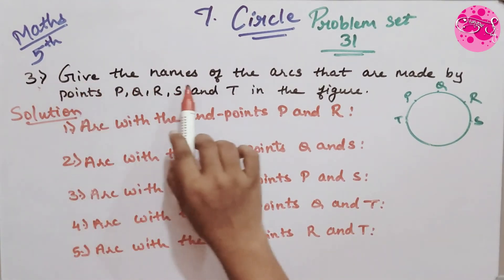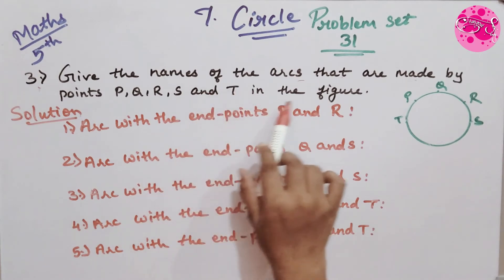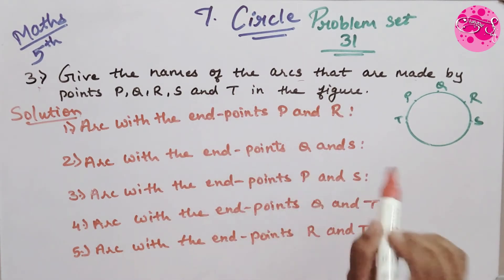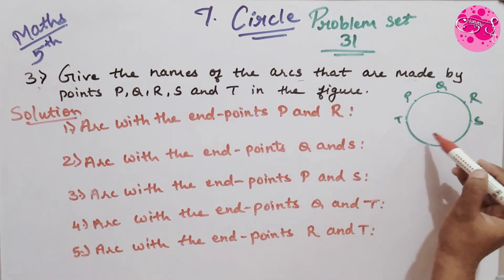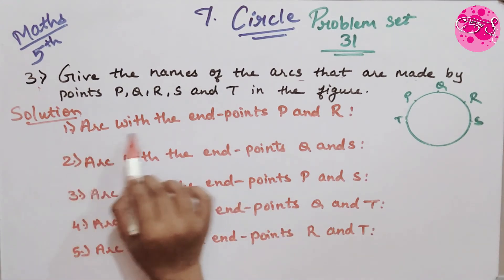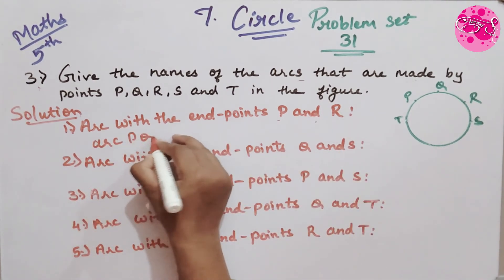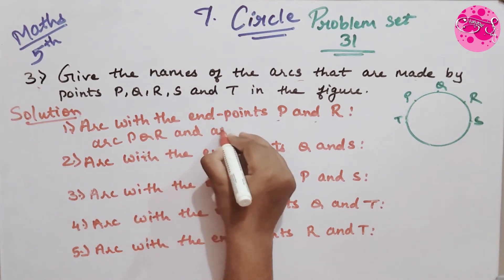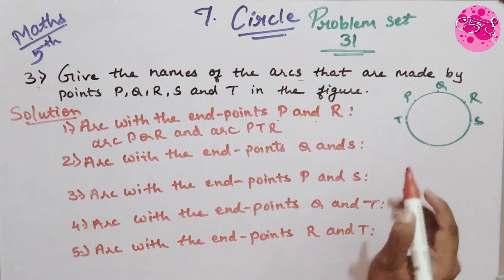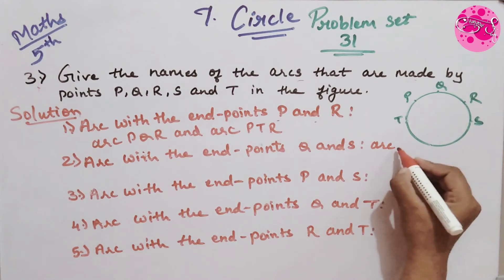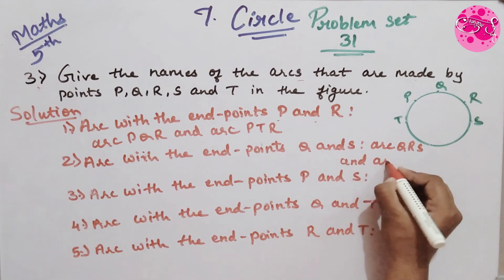Third question: Give the names of the arcs that are made by points P, Q, R, S and T in the figure. Arcs with endpoints P and R: arc PQR and arc PTR. Arcs with endpoints Q and S: arc QRS and arc QPS.